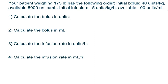For the first problem, the patient weighs 175 pounds and has the following order: an initial bolus of 40 units per kilogram, with 5,000 units per milliliter available. Then for the infusion, the initial rate is 15 units per kilogram per hour, with 100 units per milliliter available.